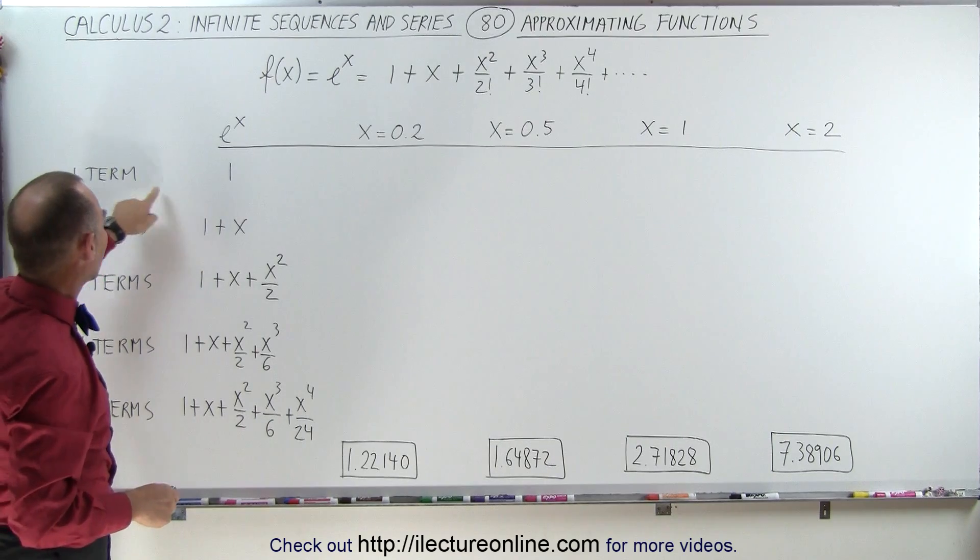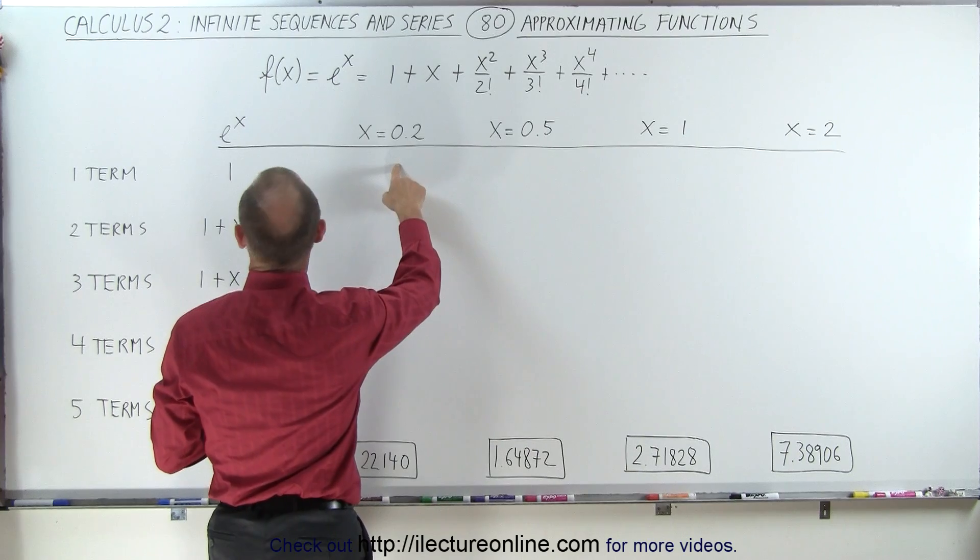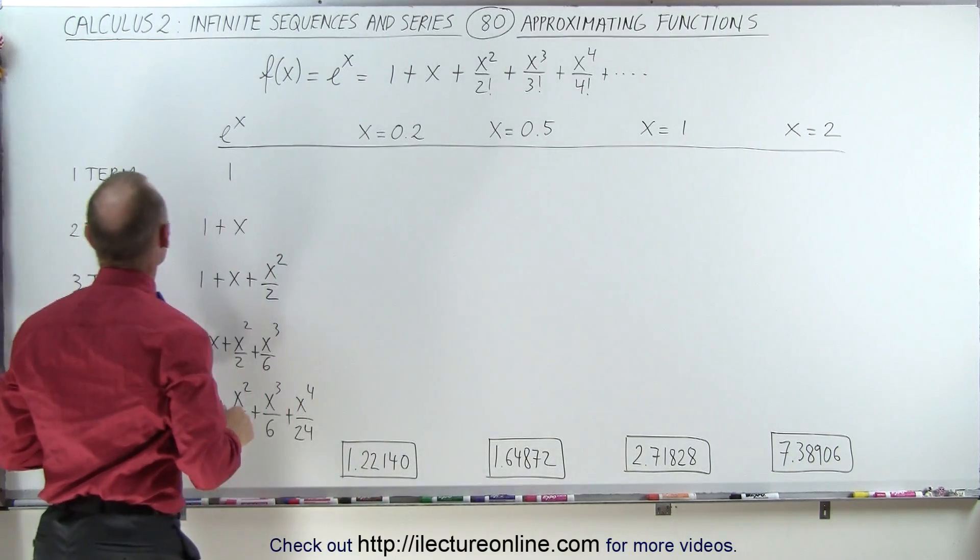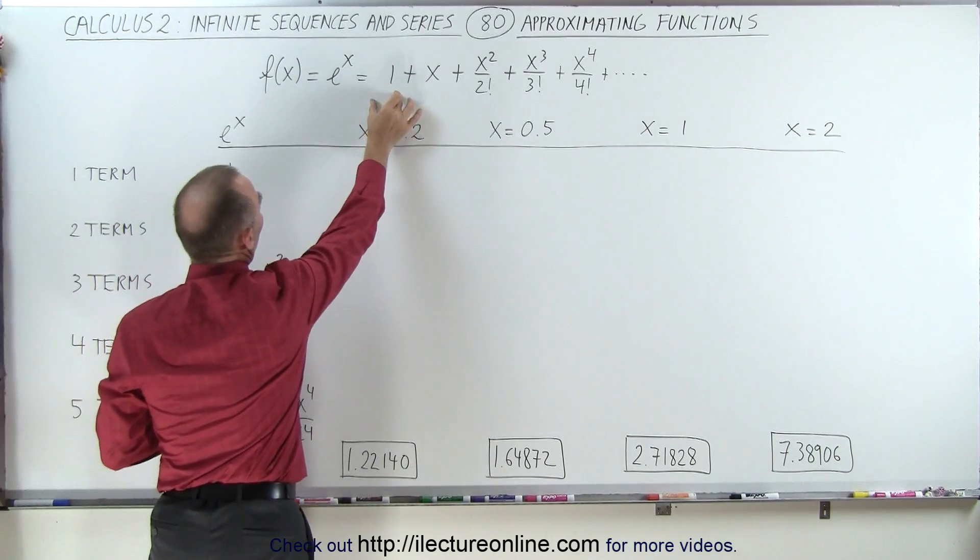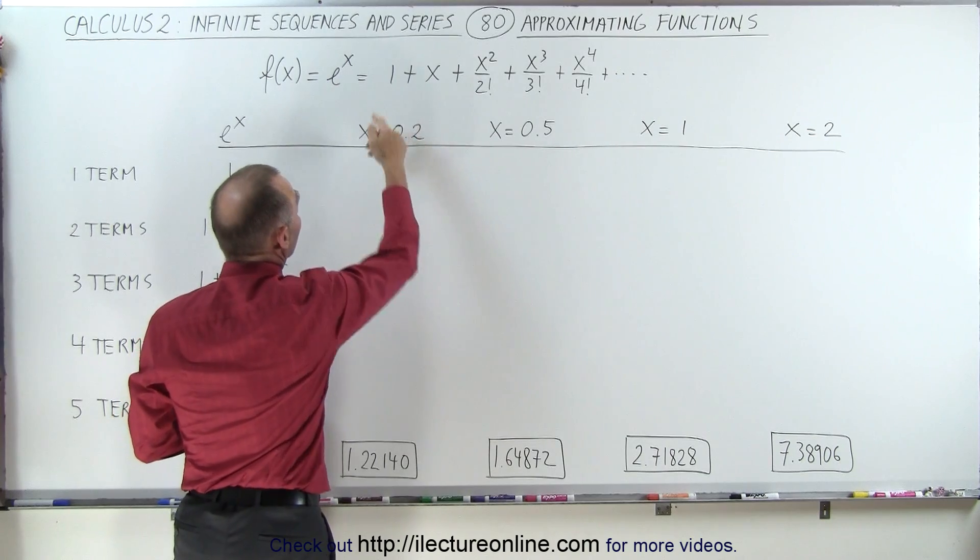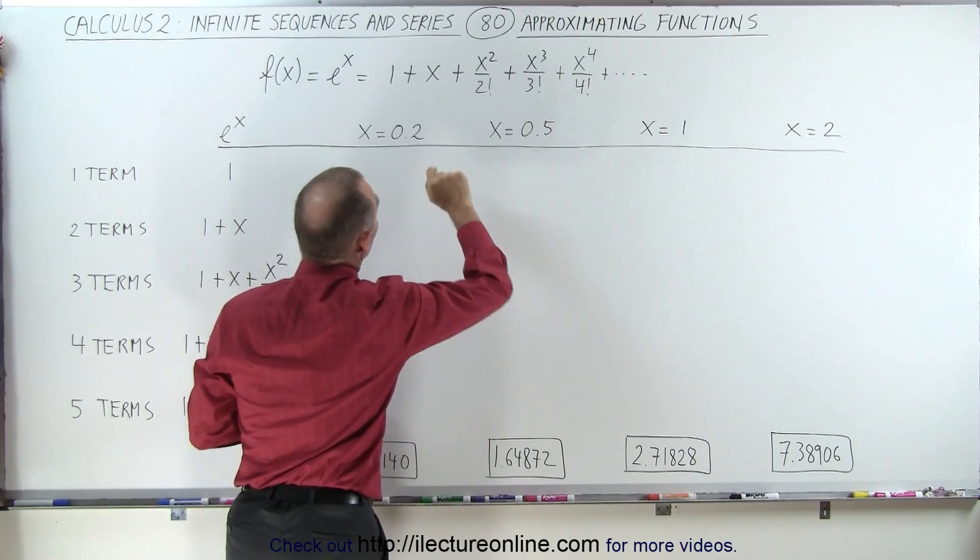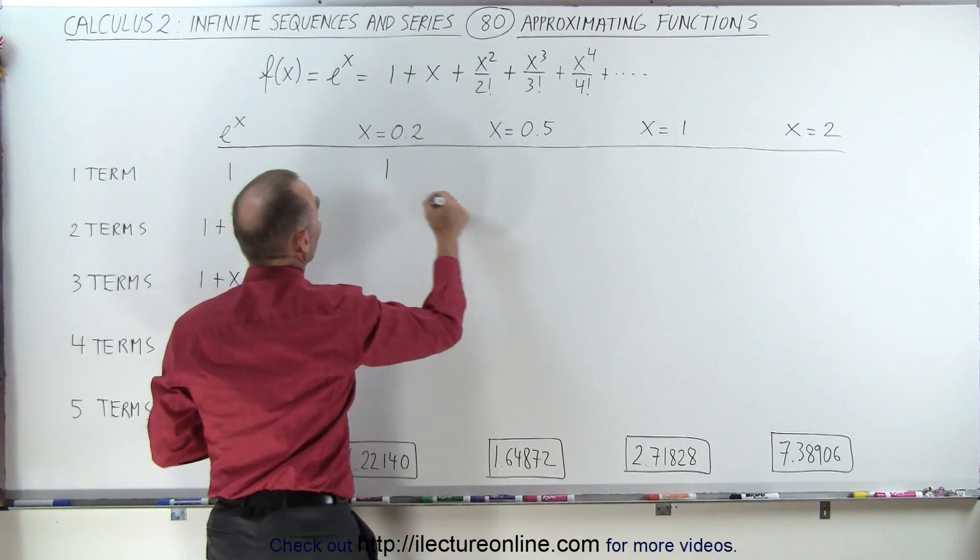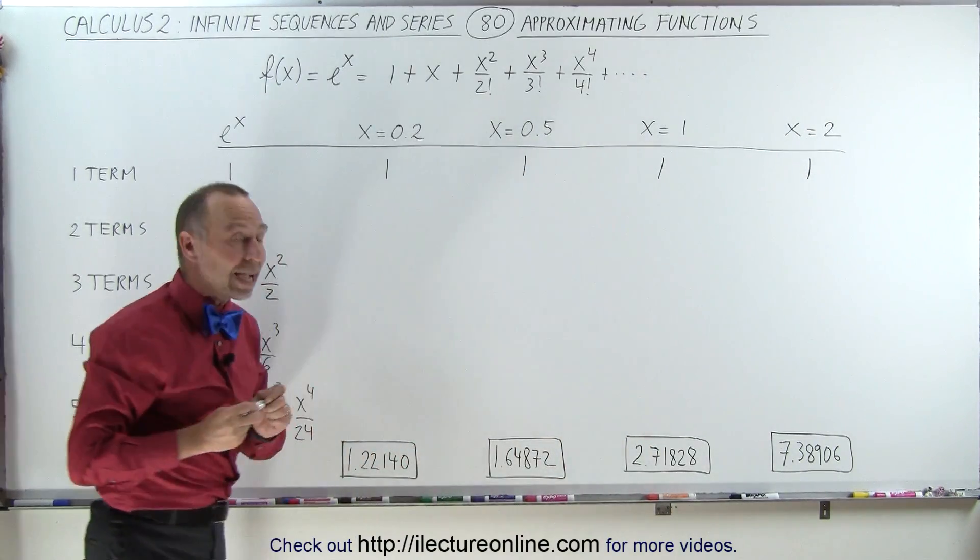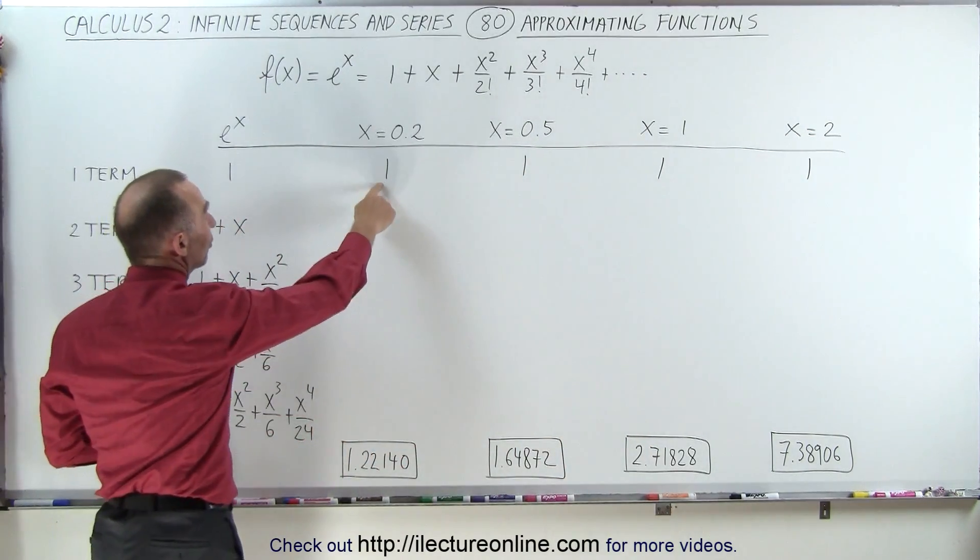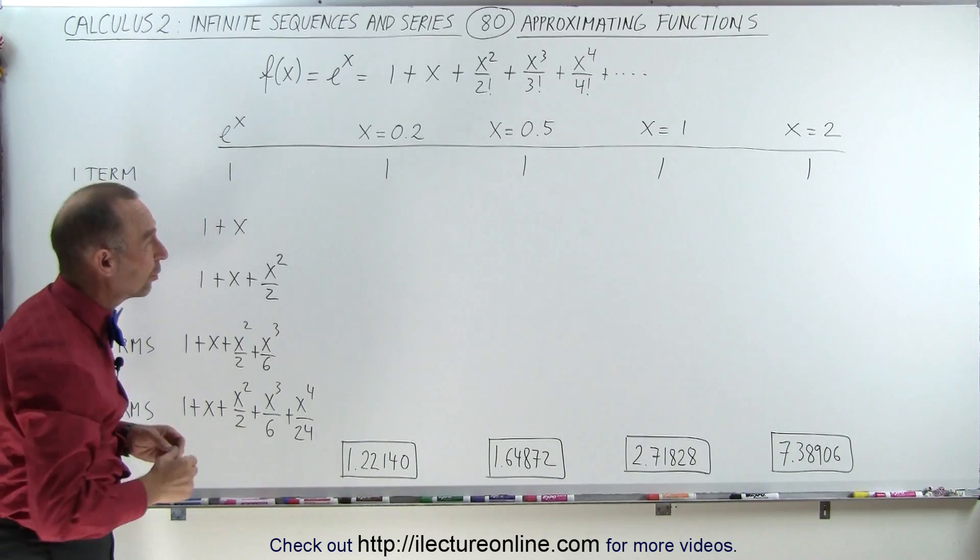So here, let's start with the first one with one term. Starting with the one term where we just take the very first term right here, since we only have one term, it doesn't matter what value we're plugging in for x because you don't count all the other terms except the first term. So that means that this is equal to one, one, one, and one. And notice you only get an accurate value when x equals zero. For x equals 0.2, it gives you a reasonable value but still not quite close enough.